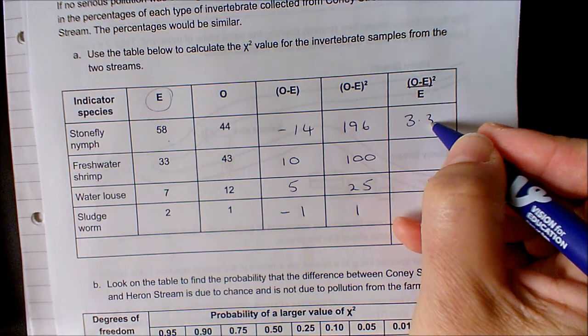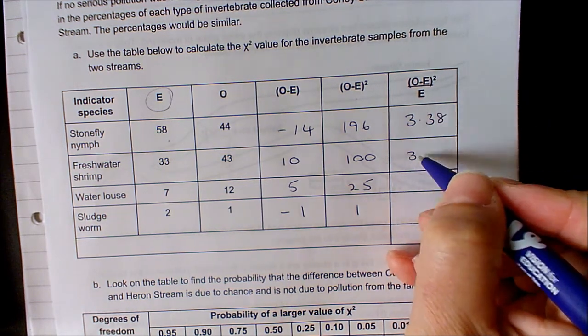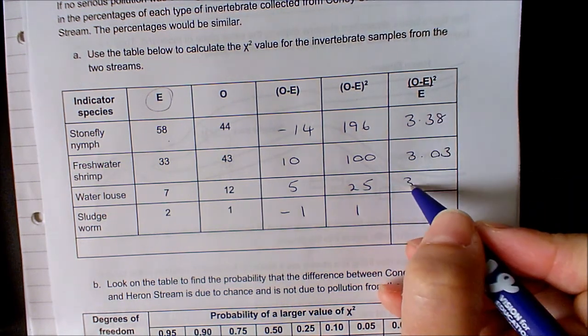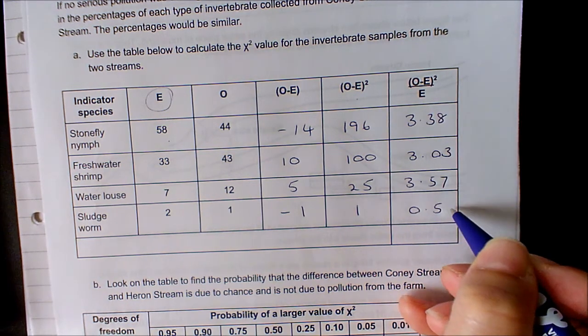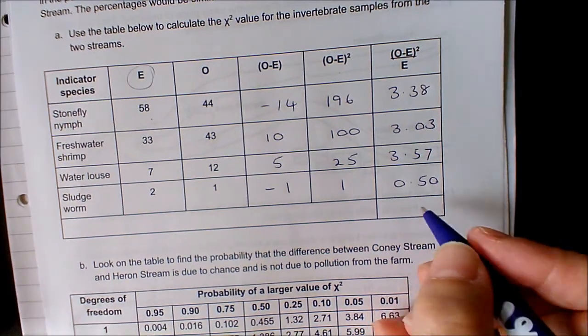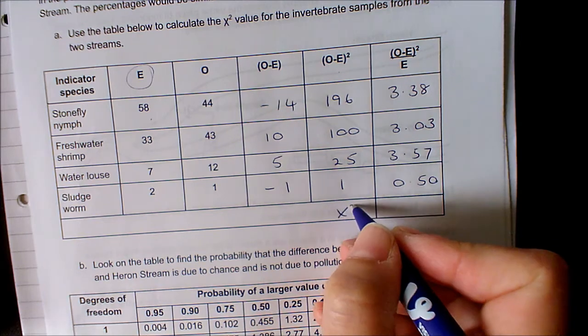And if we add those up together, that gives us a chi-squared value of 10.48.